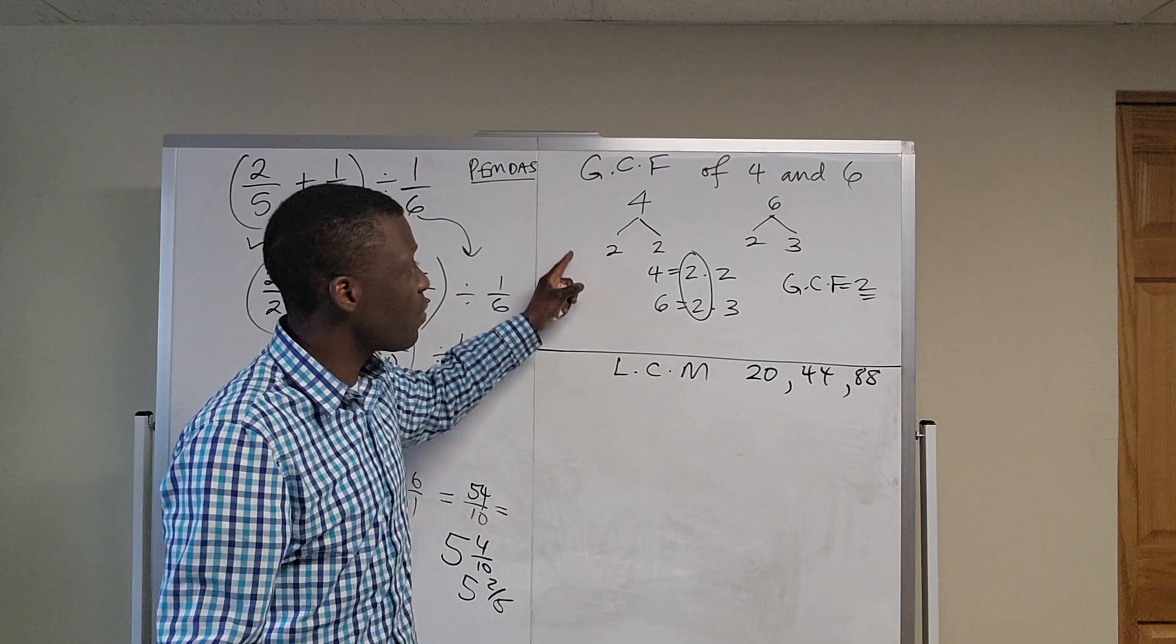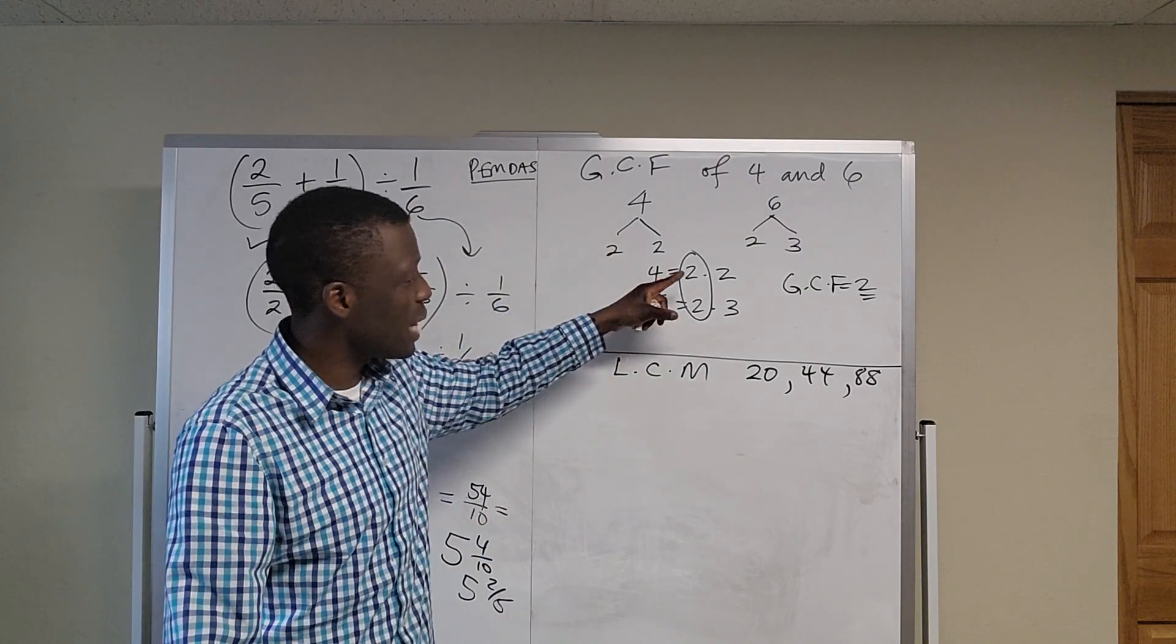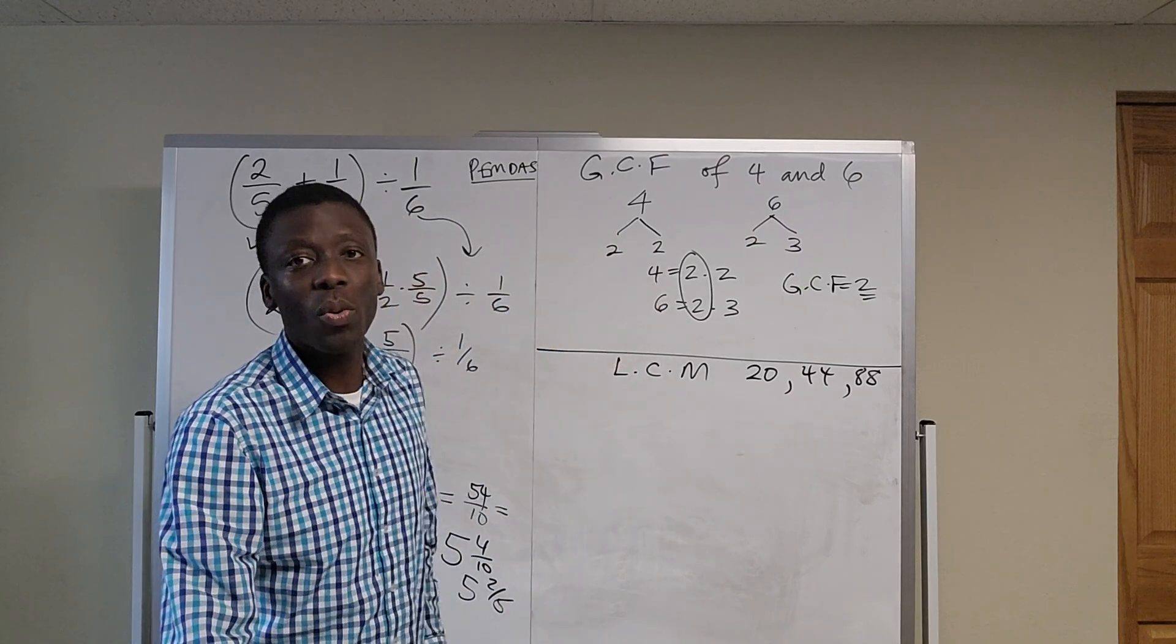But just wanted to show you a trick for finding the greatest common factor. It's 4, you break it down, you break down 6, and you circle what they have in common.